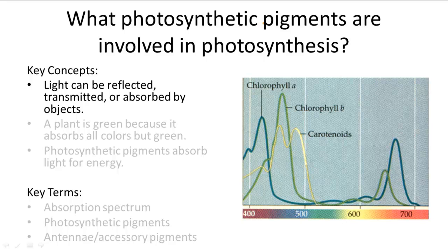A banana is yellow because it absorbs all the colors but yellow — it reflects yellow. And an apple is red because it absorbs all the colors but red. This may seem a little counterintuitive because you would think the object would show the color it absorbs. But think of a mirror — a mirror reflects images by reflecting the light that's sent to it; it doesn't absorb that light.